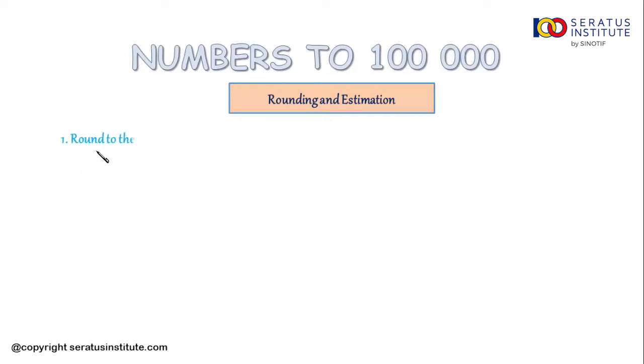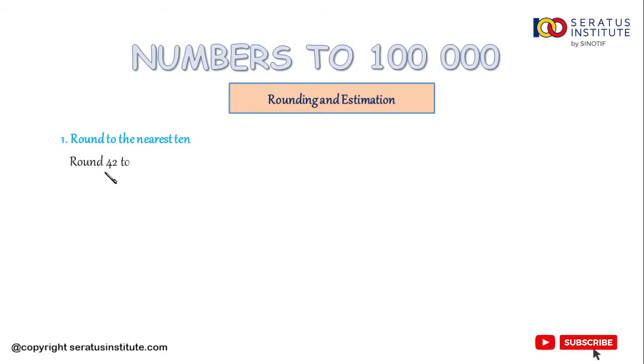The first point is rounding to the nearest 10. Now we go straight to the example. Round 42 to the nearest 10.